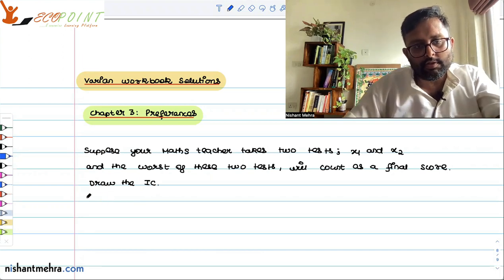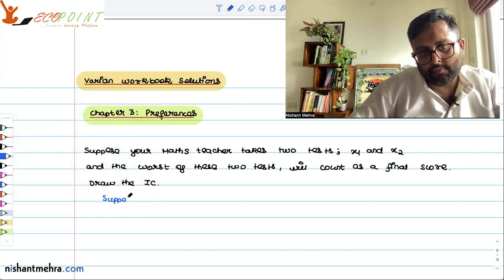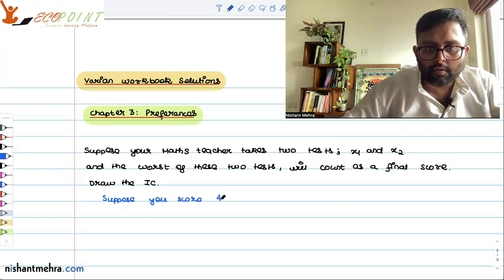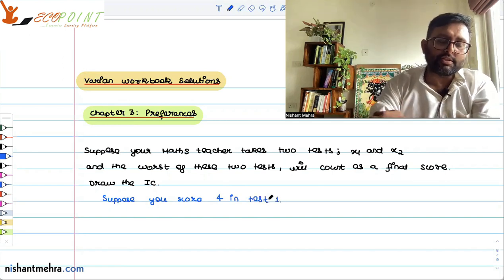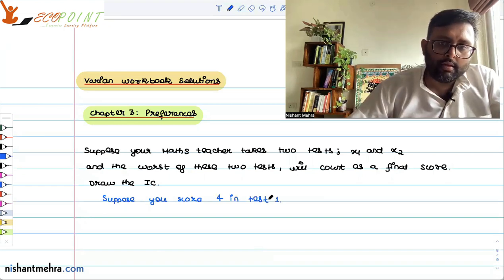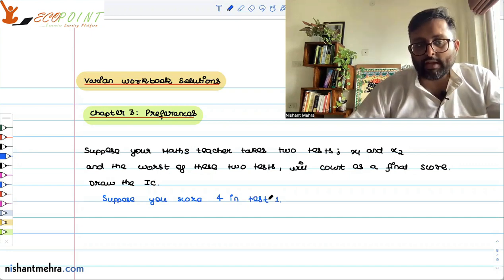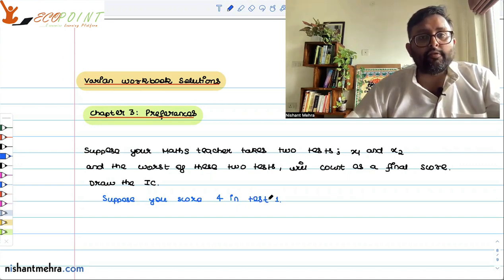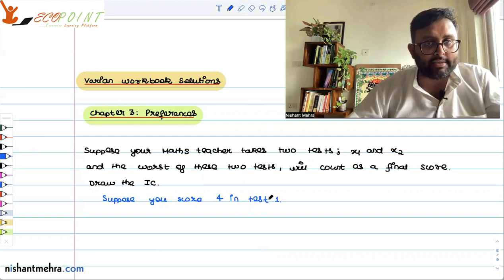Suppose you score 4 in test 1. Then you need at least 4 in test 2 so that your score would be at least 4. You can't perform worse than 4 in test 2, otherwise that will be counted as your score.